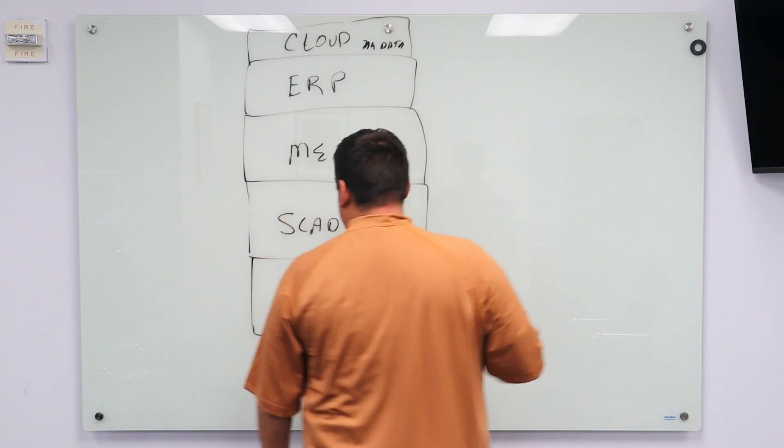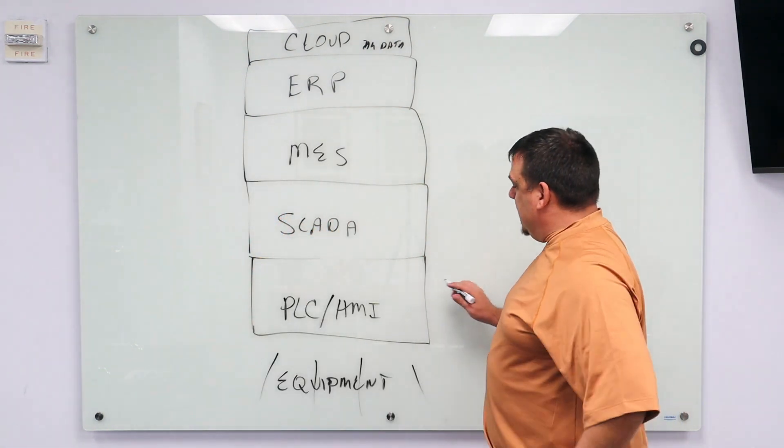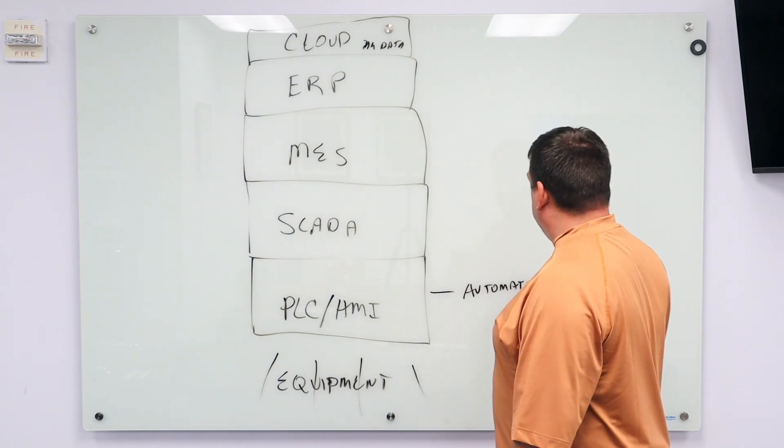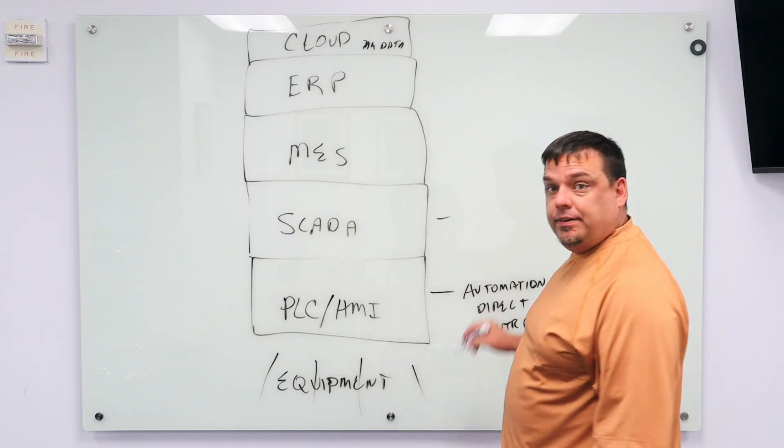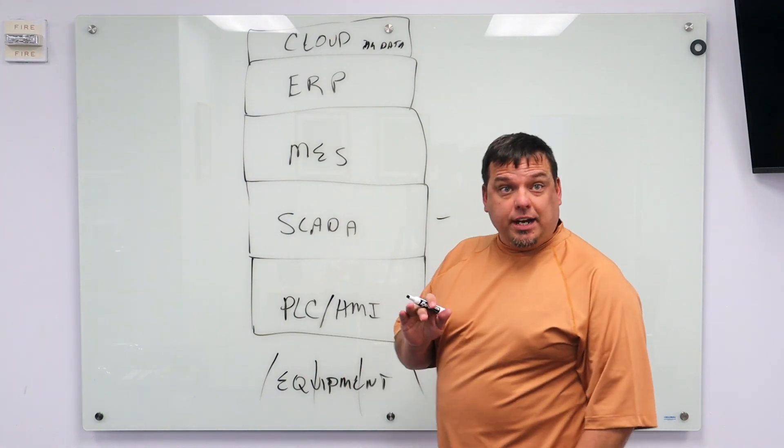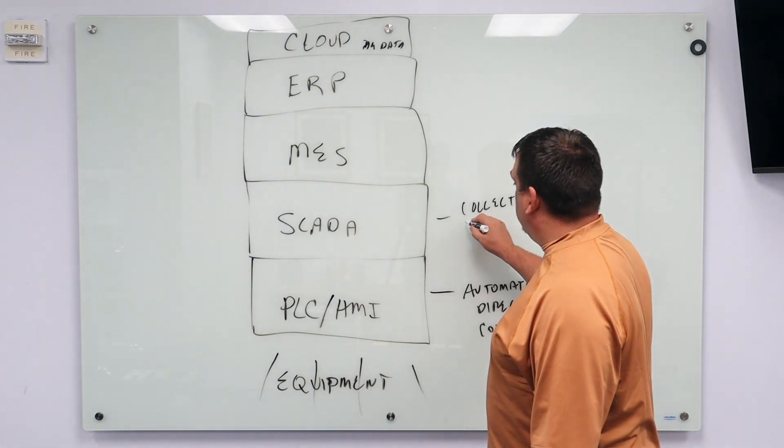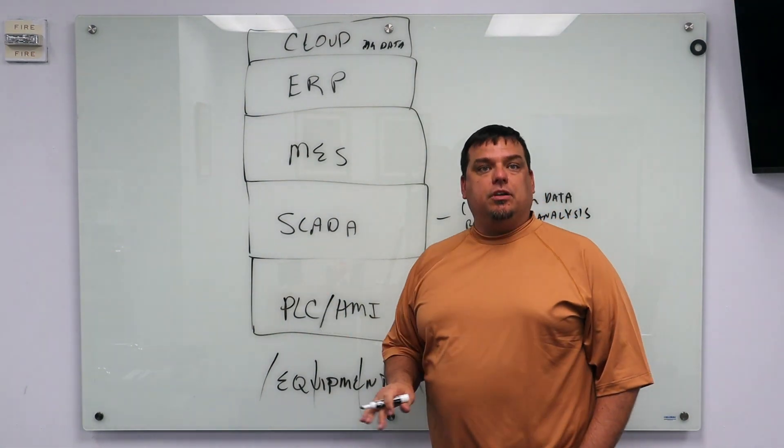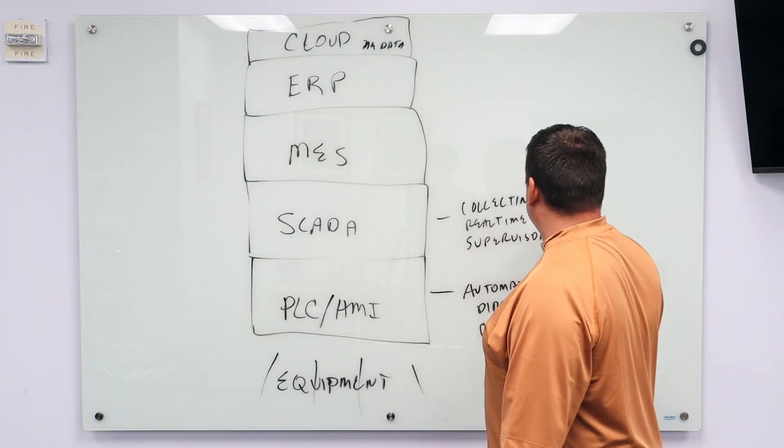What do we do at each of these layers? At the PLC, HMI layer, we're doing automation and direct control. At the SCADA layer, the supervisory control and data acquisition layer, we're collecting data. We are doing real-time analysis. This would be like current evaluation of our processes, and we're doing supervisory functions.